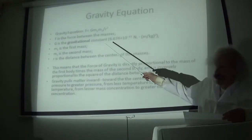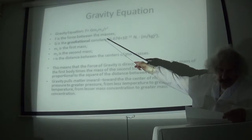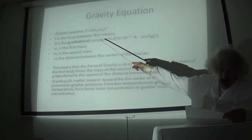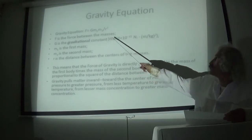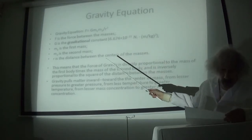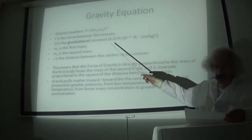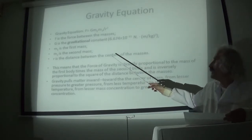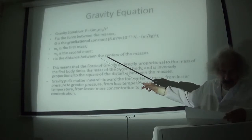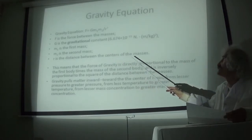Gravity equation: The force of gravity is equal to G times M1 times M2 divided by R squared, where F is the force due to gravity, G is the gravitational constant, M1 is the first mass, M2 is the second mass, and R is the distance between the masses.